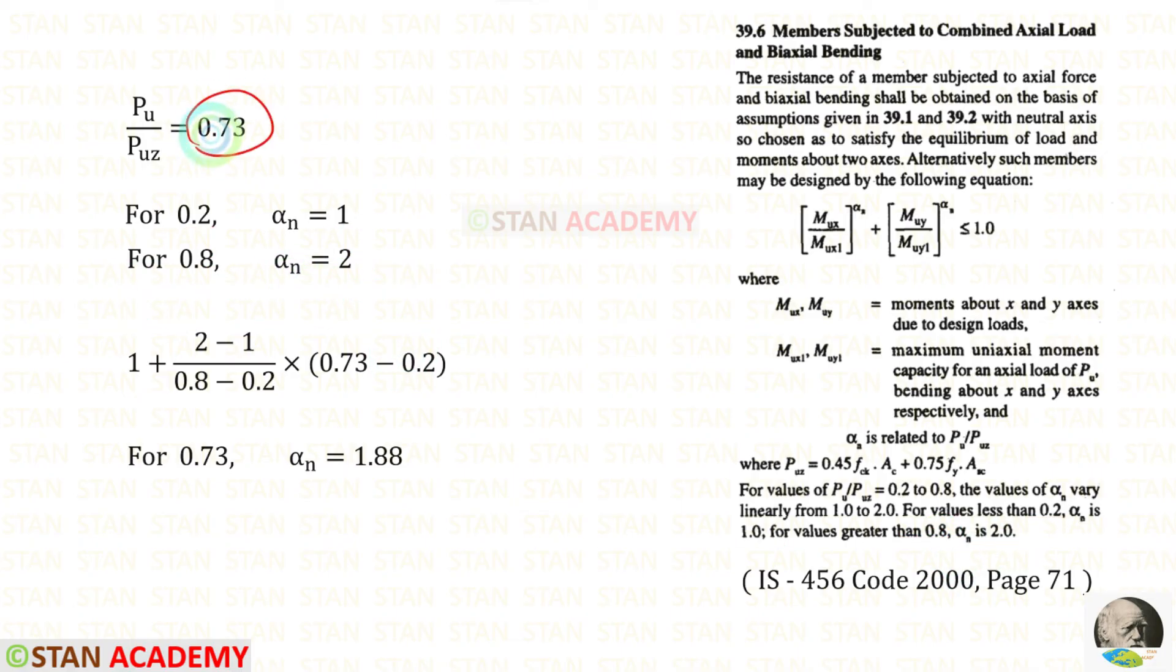To find for 0.73, we can use interpolation. We can use the smallest value plus the bigger value minus the smaller value 0.8 minus 0.2 into the value for which we have to find alpha n, that is 0.73 minus 0.2. In this way, for alpha n, we will get 1.88.